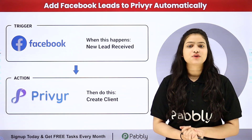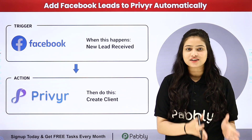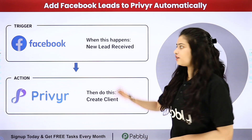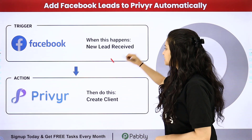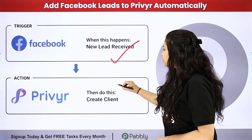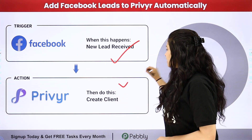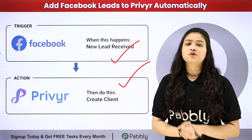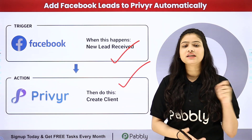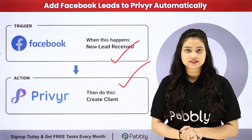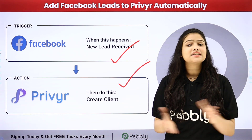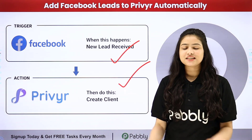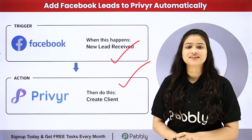Pabbly Connect works on two principles: trigger and action. In the trigger we are going to take Facebook lead ads, and in the action we are going to take Preview CRM. We will connect both of them in order to automate this entire process without any coding or programming skills. To learn this entire automation step by step, let me take you all to my screen.